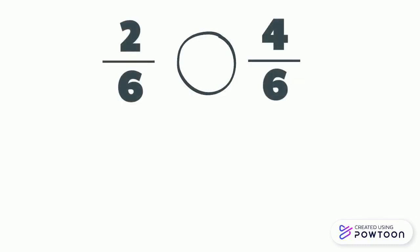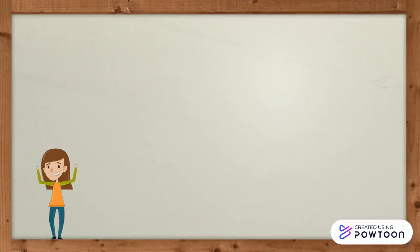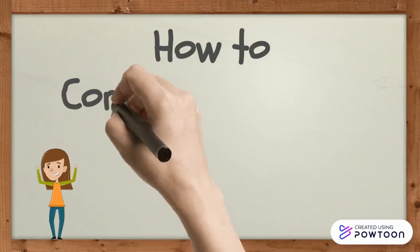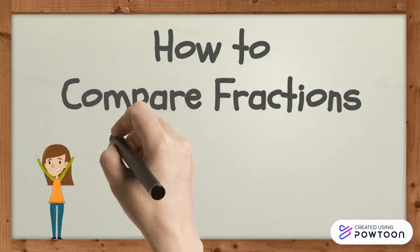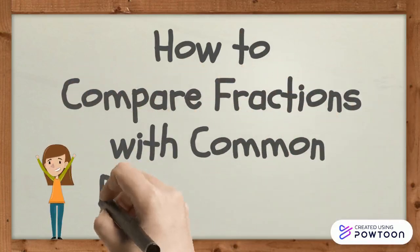Hopefully your model looked something like this. We can read this statement as two-sixths is less than four-sixths. Today we learned how to compare fractions with common denominators. Thanks for watching!